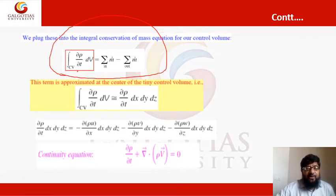Del rho by del t of dV over whole control volume is rate of change of mass inside the control volume. That must be equal to the total mass flow rate entering minus exiting.